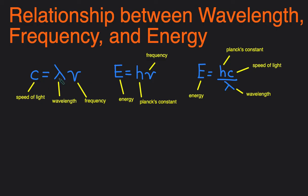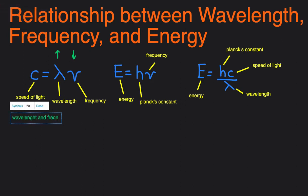So the first one: C equals lambda times frequency. So speed of light equals the wavelength times frequency. Speed of light is a constant, and since wavelength and frequency are both multiplying to a constant, that means these are going to be inversely related. As this one goes up, this one has to go down to keep this number the same. So we can say that wavelength and frequency are inversely related.